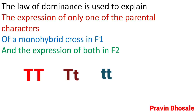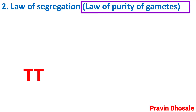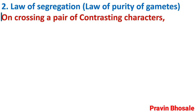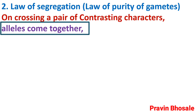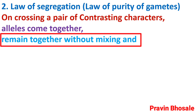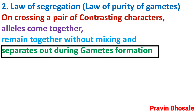Second is the Law of Segregation, also called the Law of Purity of Gametes — Mendel's second law. On crossing a pair of contrasting characters, alleles come together. These characters come together, they remain together without mixing, and separate out during gamete formation.